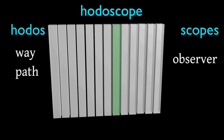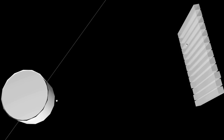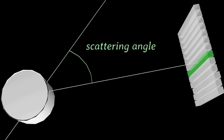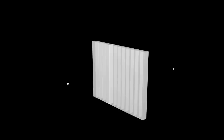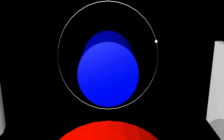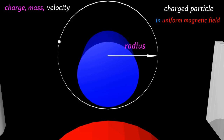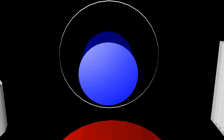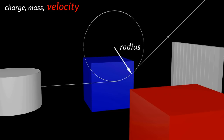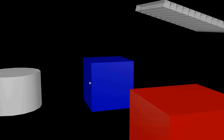Such a device, which consists of an array of organic scintillators, is called a hodoscope — from the Greek 'hodos' for way or path, and 'scopos' an observer. With the help of a hodoscope we can measure the scattering angle of a particle. Moreover, we can measure in a similar way the momentum or velocity of charged particles, since a charged particle in a magnetic field moves on a circle. Knowing the radius of the circle as well as the charge and mass of the particle, we can find its momentum. A second hodoscope placed at an angle measures the particle trajectory in the horizontal plane to determine the radius of curvature.